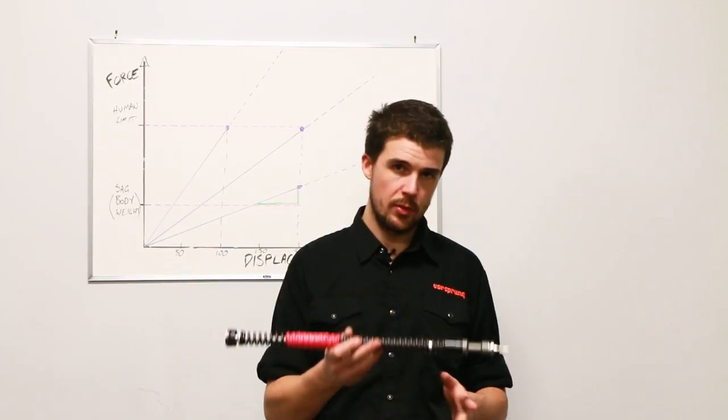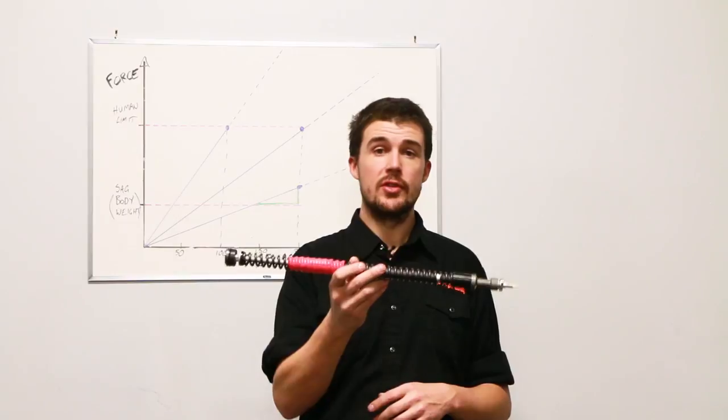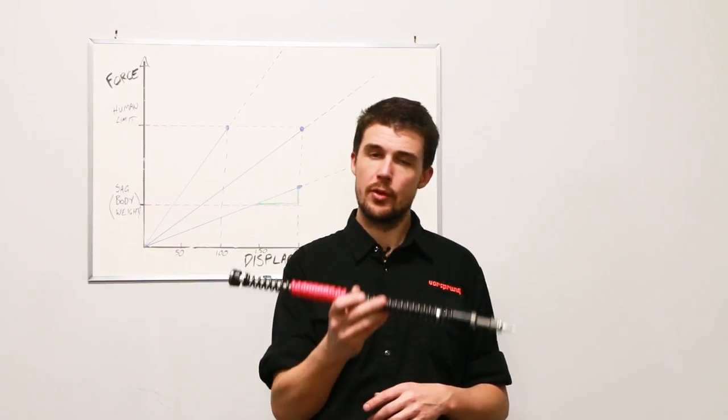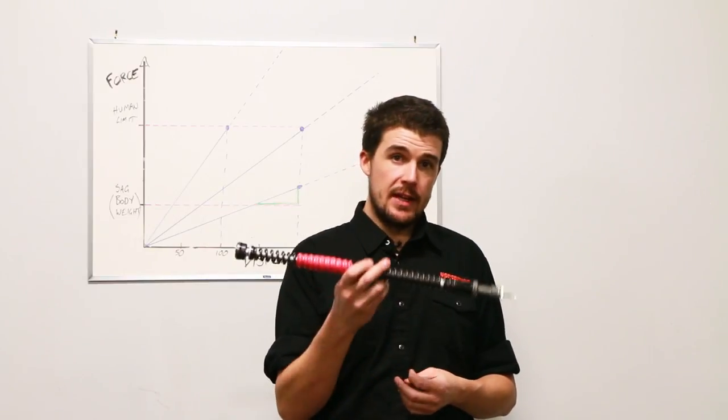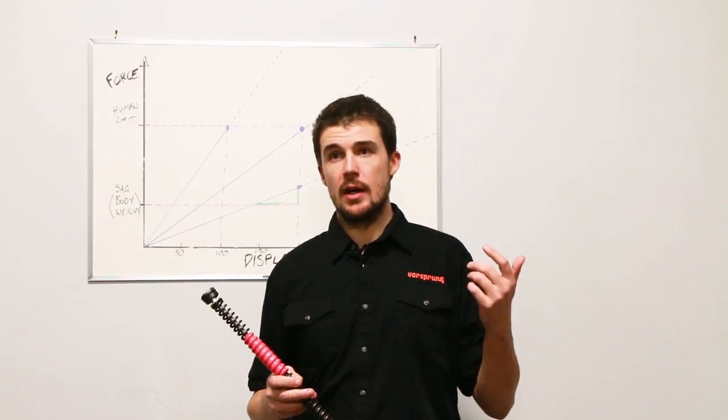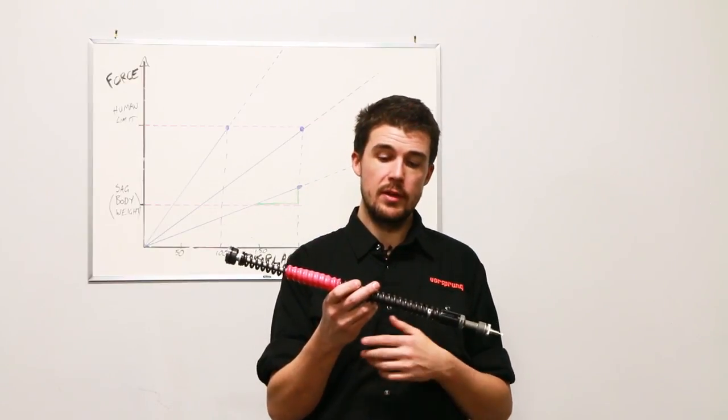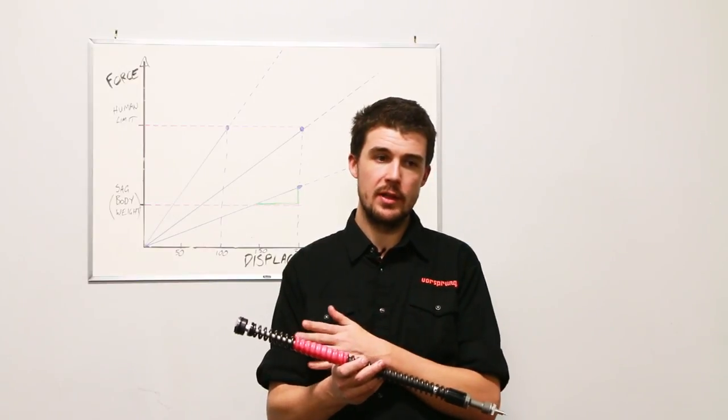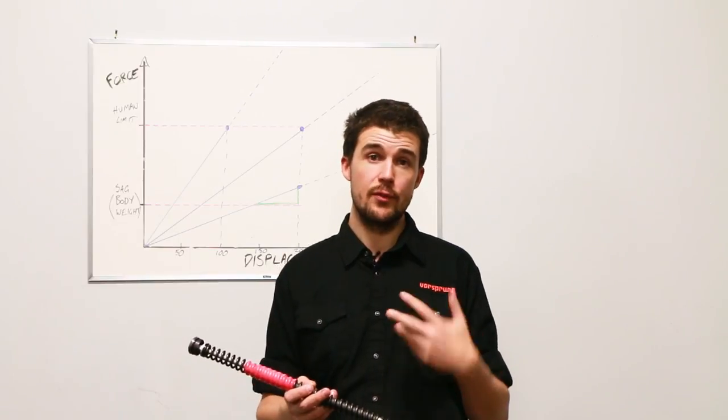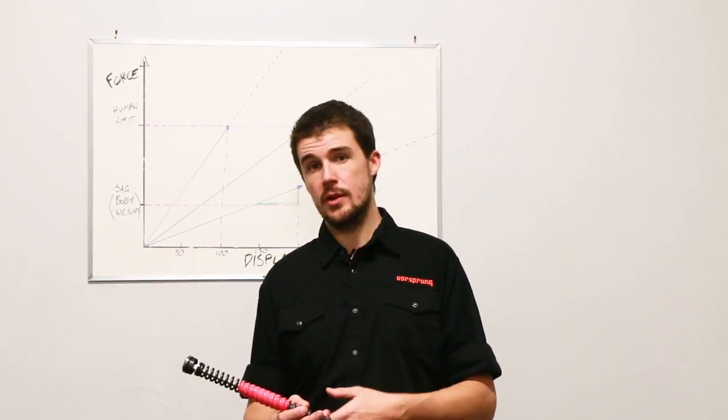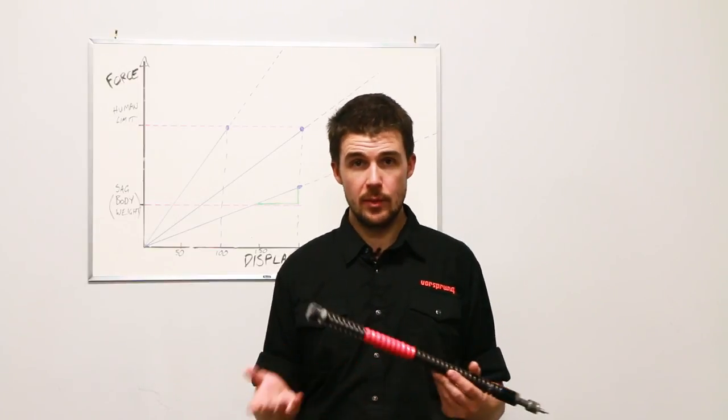Spring rate behavior of coils is obviously different to air. Coil springs themselves, unless they're progressively wound, which is relatively uncommon, by and large they are completely linear or so close to linear that the non-linearities are negligible. This has advantages and disadvantages when compared to an air spring. An air spring tends to be very much stiff, soft, stiff.